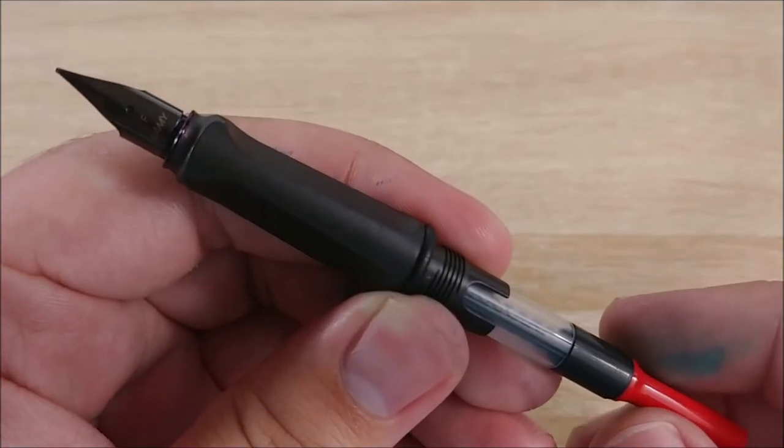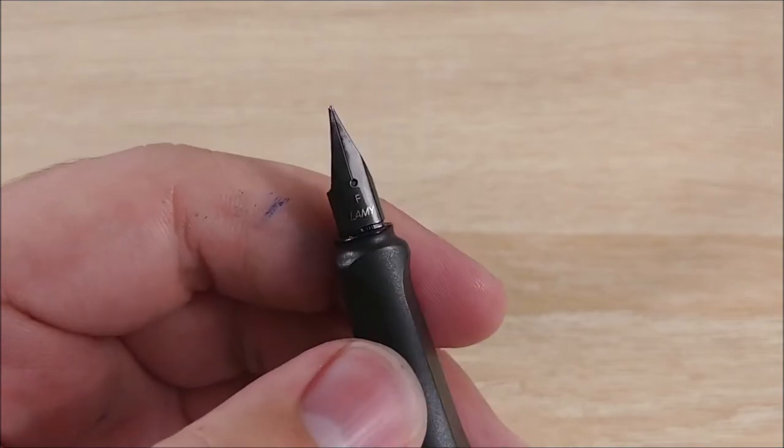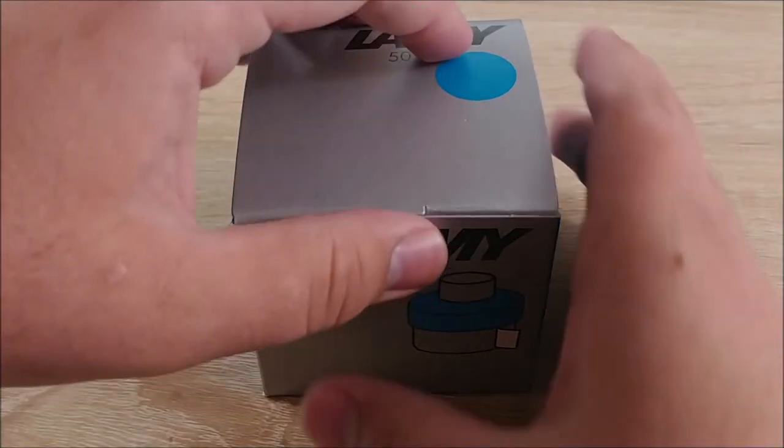A fountain pen is essentially a controlled leak, thanks to Richard Bender, that goes from the converter through the section, through the feed, and then through the nib onto the paper.